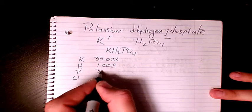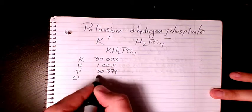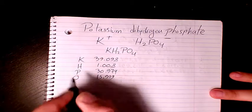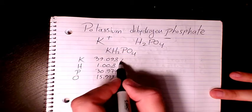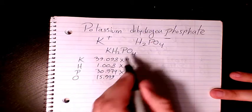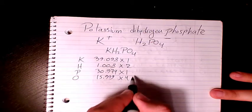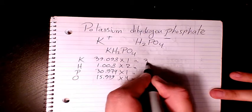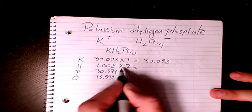How many potassium we have? We have just one. How many hydrogen? Two. How many phosphorus? One. And how many oxygen we have? Four. So that's gonna be 39.098, then you would multiply. This one is gonna be 2.016, this one is gonna be the same 30.974, and here we have 63.996.